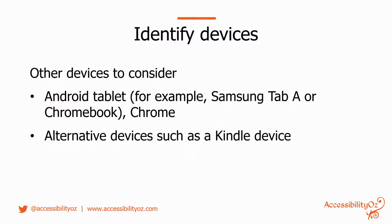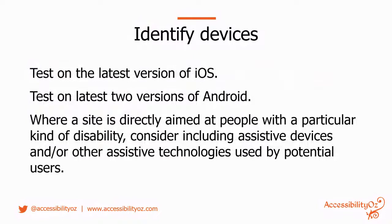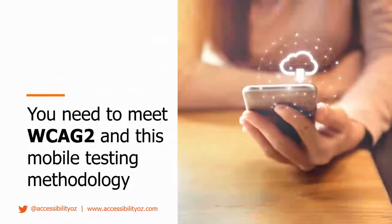We recommend testing on the latest version of iOS and the latest two versions of Android. Of course, where a site is directly aimed at people with a particular kind of disability, include assistive devices used by those people. For example, if your site is specifically aimed at people with acquired brain injuries, you'll want to test with things like Dragon NaturallySpeaking because those are the technologies those people use. And I've said it before: you need to meet WCAG 2 as well as this methodology — you can't just use this methodology alone.